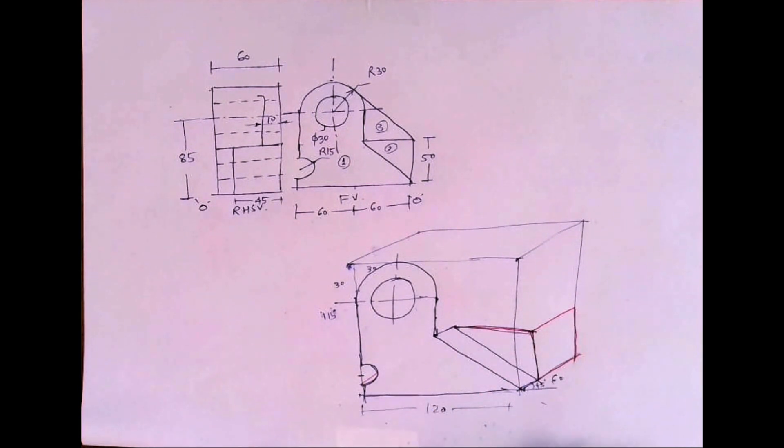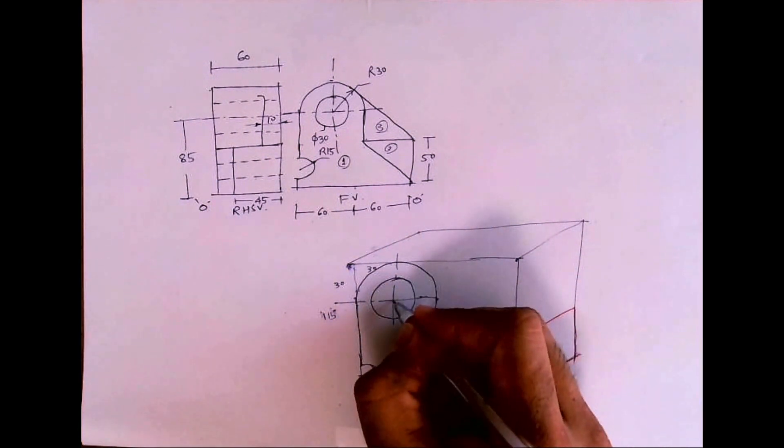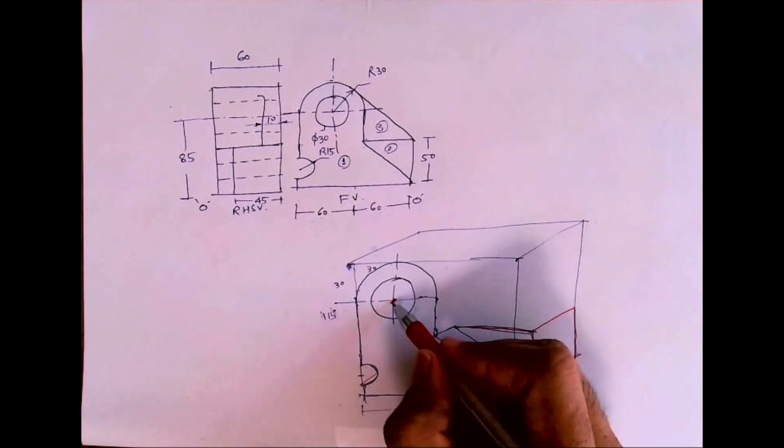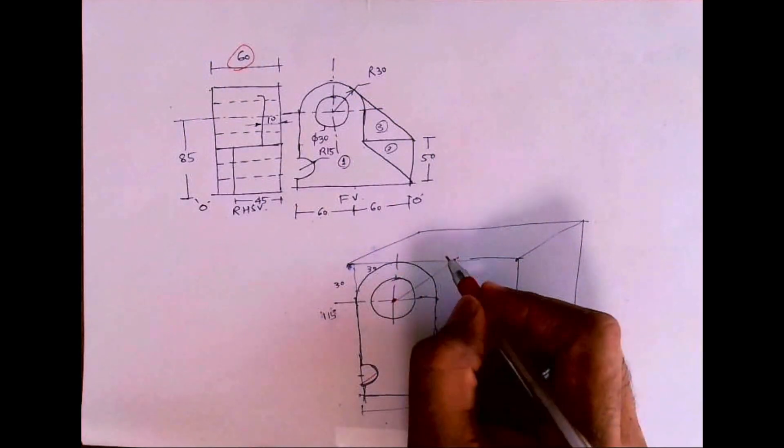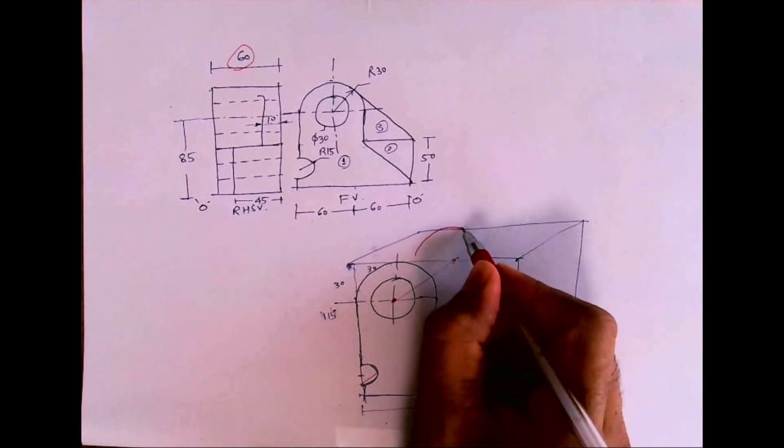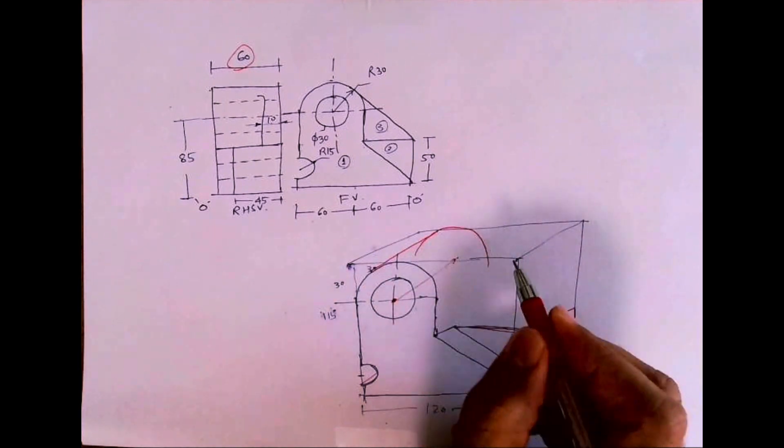This part is done, this part is done. Now this circle is behind also. So from this point I'll go behind. How much do I have to go behind? 60. And I will draw a curve with the same radius and tangent.